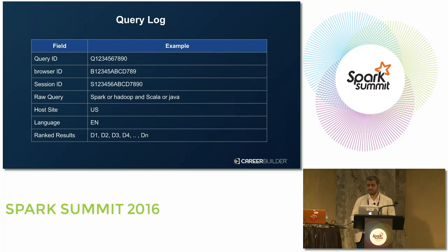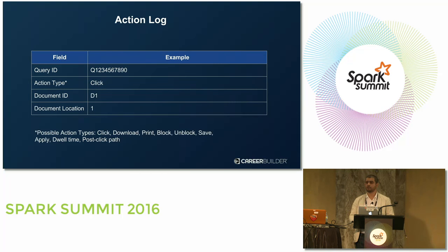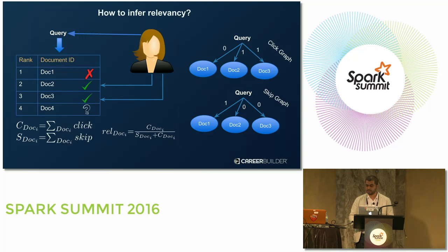To implement this, you need query logs. The search query logs should include: query ID, browser ID, session ID, the raw query keyword submitted by the user, and ranked results — in our case up to 25 documents per query. Then you also log the actions: query ID, action type (click, download, save, etc.), document ID, and document location. Given those two logs — the query log and the action log — we can implement the relevancy inference.